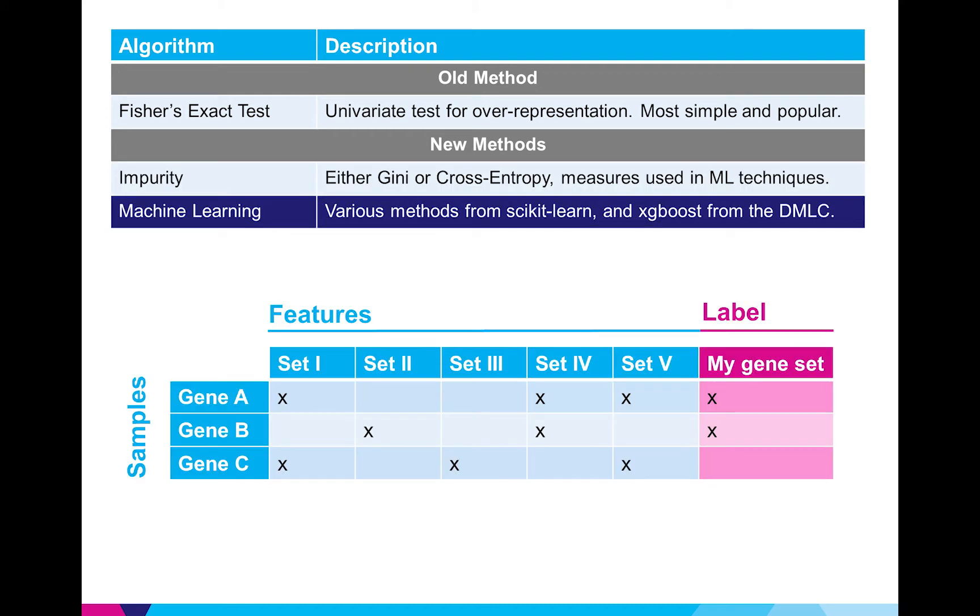So I also looked at actual machine learning techniques and these require two steps. The first step was to build a classifier that would assign the label of belonging to my input gene set or not to each gene in the gene set library, the samples, based on their features which would be their membership in the sets in the library. After I build this classifier I can extract what's called the feature importances and the interpretation of this depends on the algorithm at hand but basically the more important features would be more relied on by the algorithm so I can interpret this as the enrichment score. And because these algorithms consider combinations of features at a time they're implicitly taking into account gene correlations.